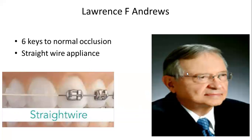Lawrence F. Andrews introduced the straight wire appliance and gave us the six keys to normal occlusion. In the straight wire appliance, you can see metal brackets and ceramic brackets. The slot is horizontal, unlike the Begg bracket which had a vertical slot — here you insert the wire edgewise into a horizontal slot.